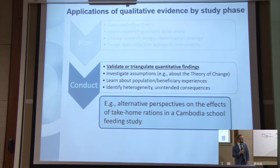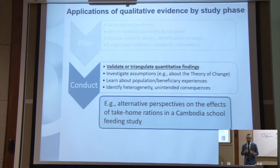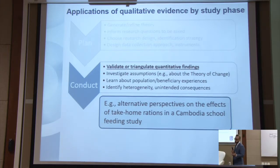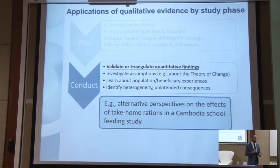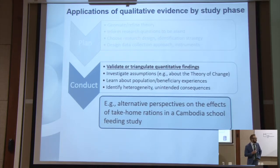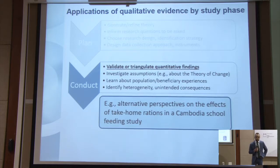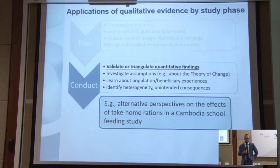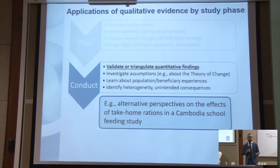In a school feeding study in Cambodia, they were providing take-home rations to the poorest families as a way of trying to buffer against food shortages and to make sure that there would be sufficient nutritional composition and quantity for children. The quantitative results indicated that there was no positive effect of this take-home ration on the food consumption of the beneficiary children. So if you were to leave it at that, you might think it doesn't work.